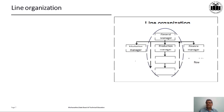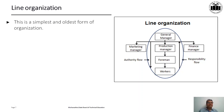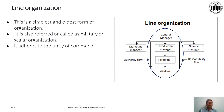In the line organization diagram, there is a General Manager at the top and different functions — marketing, production, and finance. Under the production manager is a foreman, and workers are under the foreman. Authority flows from the top downward and responsibility flows upward. This is the simplest and oldest form of organization, also referred to as military or scalar organization, adhering to unity of command — the one man, one boss system.